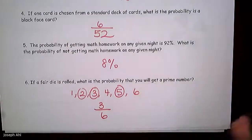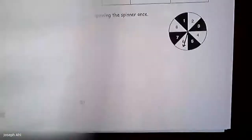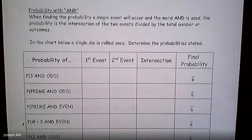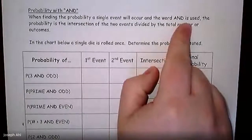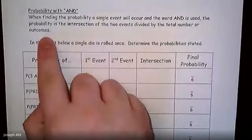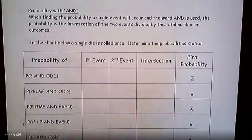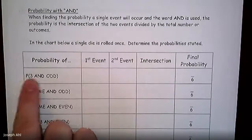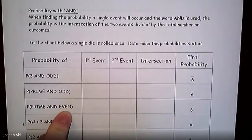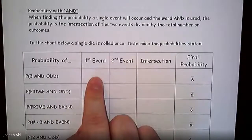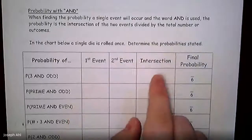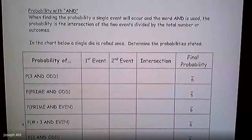Now we're going to talk about probability with the word 'and.' When finding the probability that a single event will occur and the word 'and' is used, the probability is the intersection of the two events divided by the total number of outcomes. So if I want, on a single die, to roll a three AND an odd, or a prime AND an odd, or a prime AND an even — what we do is list the possible outcomes for each event and then see if those two groups have anything in common. That's the intersection.